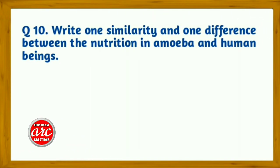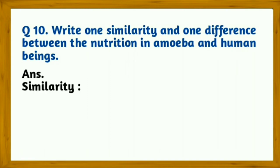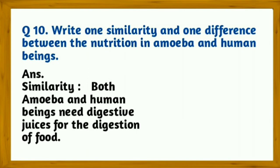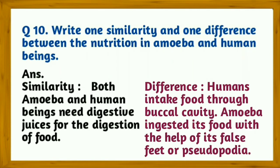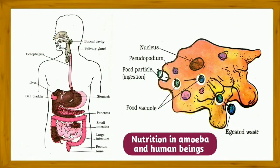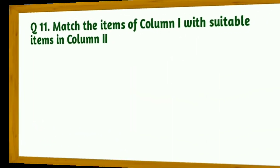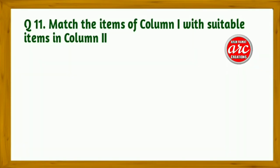Question 10: Write one similarity and one difference between nutrition in amoeba and human beings. Similarity: Both use digestive juices for the digestion of food. Difference: Humans intake food through the buccal cavity, whereas amoeba ingests food with the help of pseudopodia.